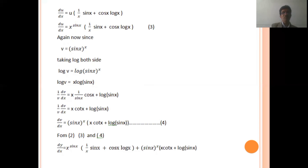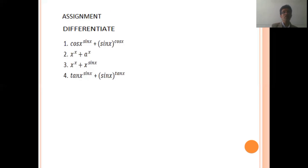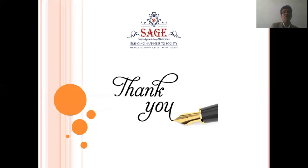Now, from equation numbers two, three, and four, substituting the values of du upon dx and dv upon dx into equation number one, we get: dy by dx equal to x to the power sin x times (sin x upon x plus cos x log x), plus sin x to the power x times (x cot x plus log sin x). This is our assignment problem for the students. Thank you.